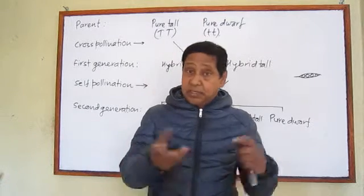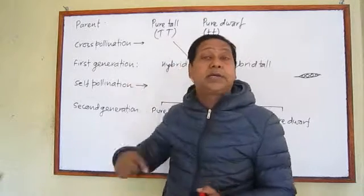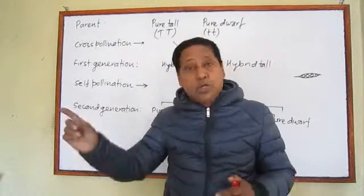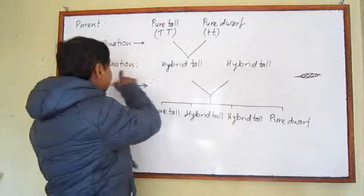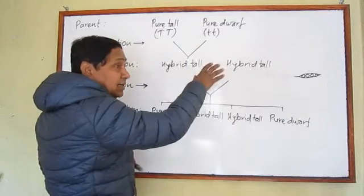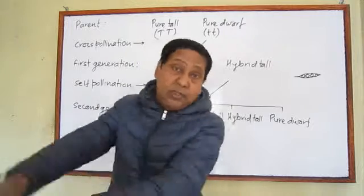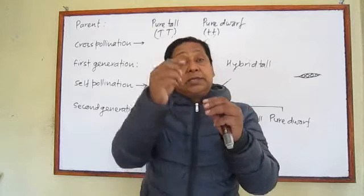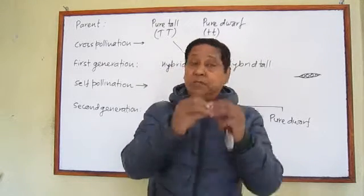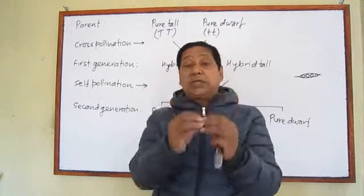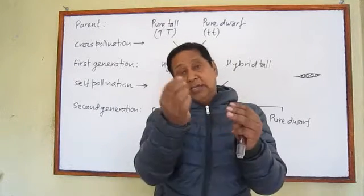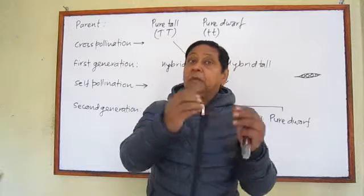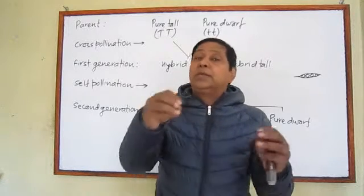He was confused at that time and was thinking about where the character of dwarfness had gone. Then he performed self-pollination in the tall pea plants of the first generation. Self-pollination means the flower is closed and the pollen grains of the same flower reach the stigma of the same flower. After self-pollination, the flower dries out and a pea pod appears in place of every flower, and he collected the seeds.